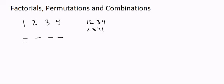For the first seat, we have four options — any one of the four students can sit on it. Once the first seat is taken, for the second seat we only have three options left. When we go to the third seat, the first and second seats are already taken, so we only have two options left. And for the last seat, the last person has to sit on it, so only one option remains.